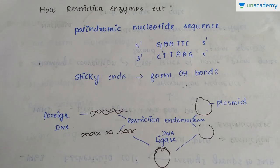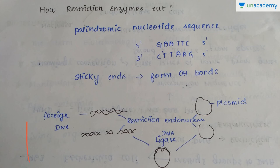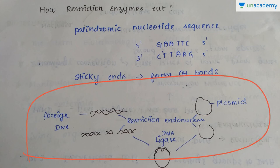So how do these restriction enzymes actually cut the DNA? These restriction enzymes move along the length of the DNA and search for a specific recognition sequence. Such a sequence is called a palindromic nucleotide sequence. Once it finds the sequence, it will break the sugar-phosphate bonds found in the double-stranded DNA, leaving sticky ends due to the formation of hydrogen bonds.